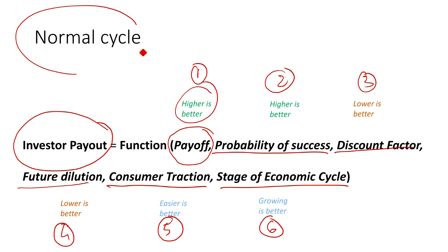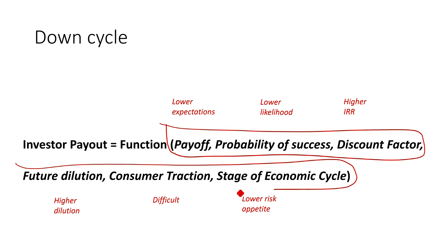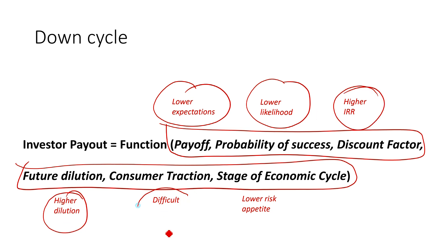But when you shift from a normal cycle to an extreme or down cycle — which is where we are right now — the drivers remain the same, but everything which was in green is now in red. Payoff expectations are lower, probability of success is lower, interest rates are higher, you need more capital to make it work, consumer traction is lower mainly because discretionary income has declined, and risk appetite on the part of customers, partners, vendors, and investors is lower.